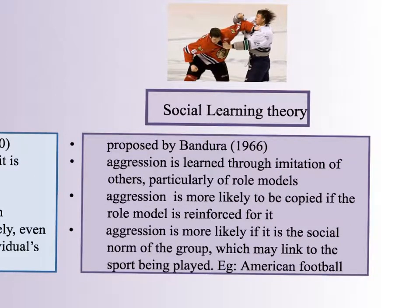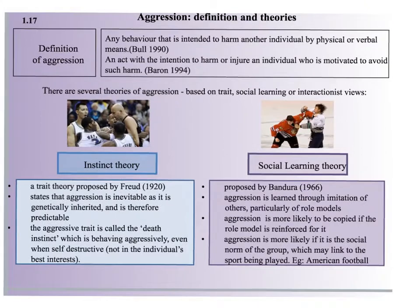Moving on to the social learning theory, proposed by Bandura: aggression is learned through the imitation of others, particularly role models. Aggression is more likely to be copied if the role model is reinforced for it — we see it on television, from parents, teachers, and friends. The more significant the person, the more likely others are to copy them. Aggression is also more likely if it is the social norm of the group, for example in rugby or American football where a degree of aggression is almost accepted.